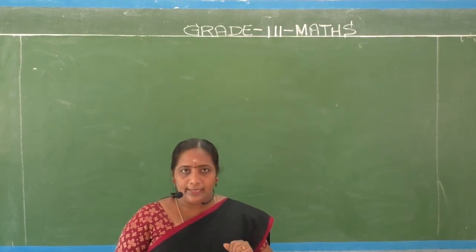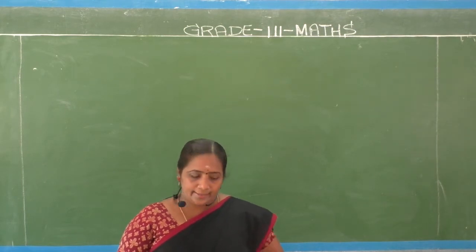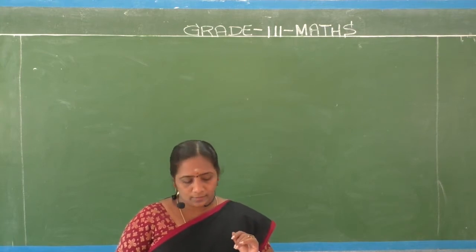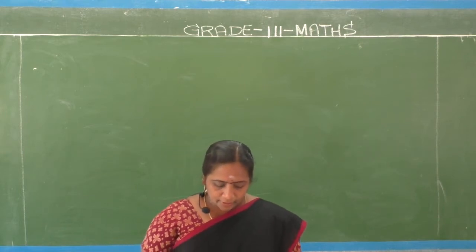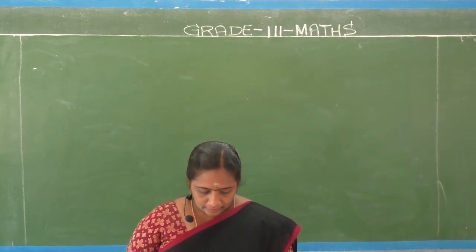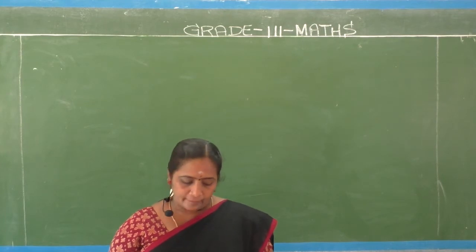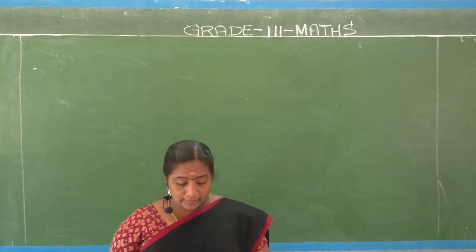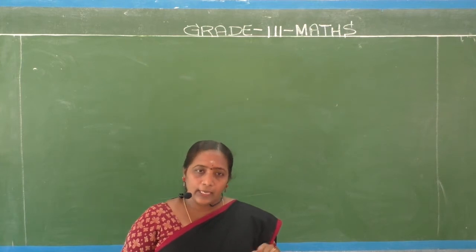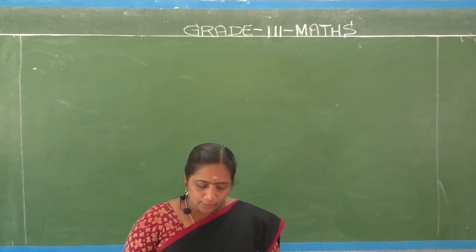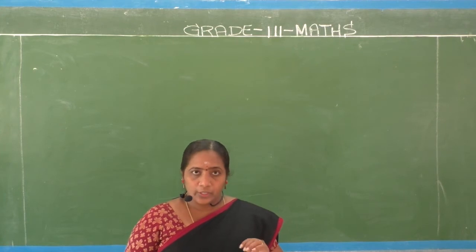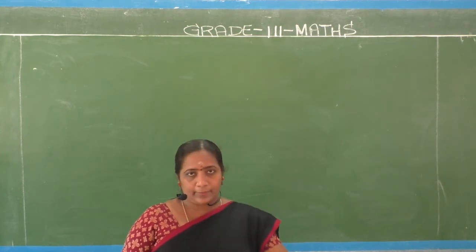Do you know subtraction already? You already studied it in second standard. Today, we are going to see subtraction with bigger numbers, larger numbers. In your book, page number 44, chapter 5, subtraction, exercise number 5.1. They gave the subtraction sums in three sections: first one horizontal type subtraction, second one vertical type subtraction, third one also subtraction only. Today we are going to see all kinds of subtractions.